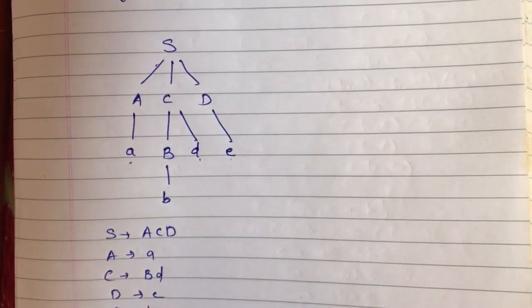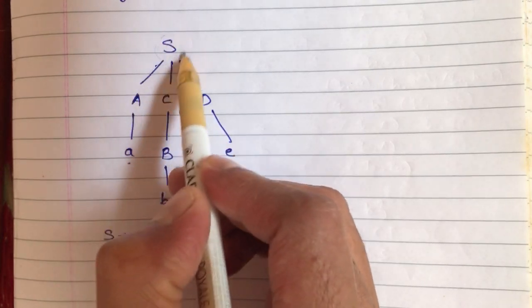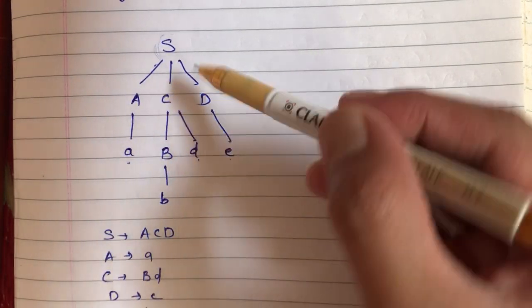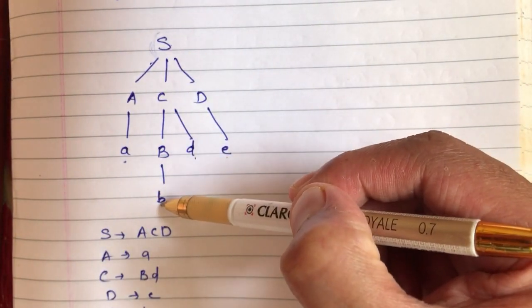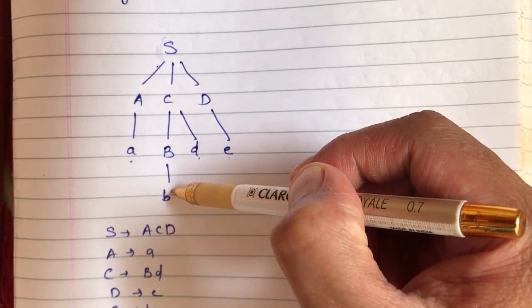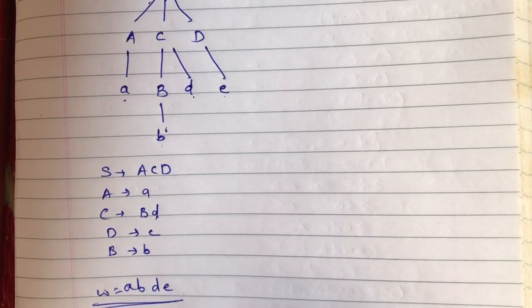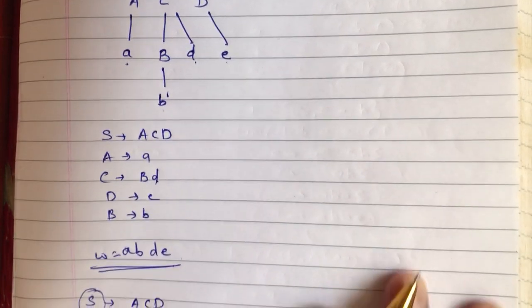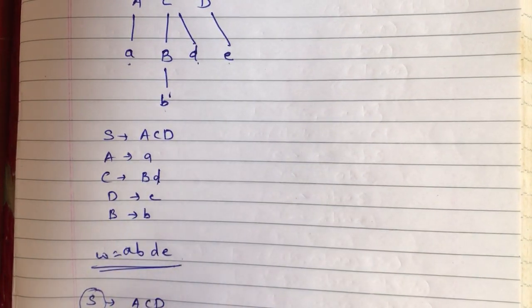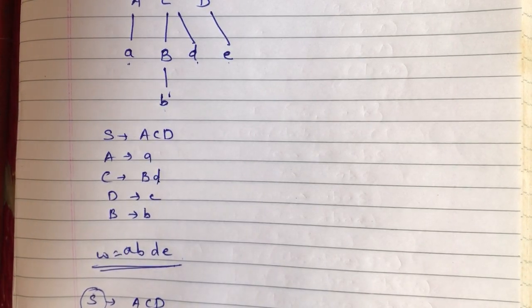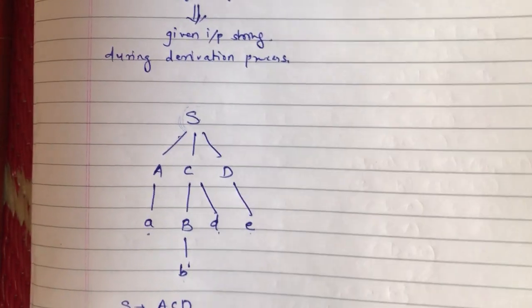In other words, we start from the root node of the parse tree and proceed towards the leaf nodes — that is why we call it the top-down approach of parsing. The same can be done with PDAs as well. We can construct a PDA for this type of language and solve its ID notation. In the ID notation also, we first start from the starting symbol of the grammar and then proceed towards the given input string.